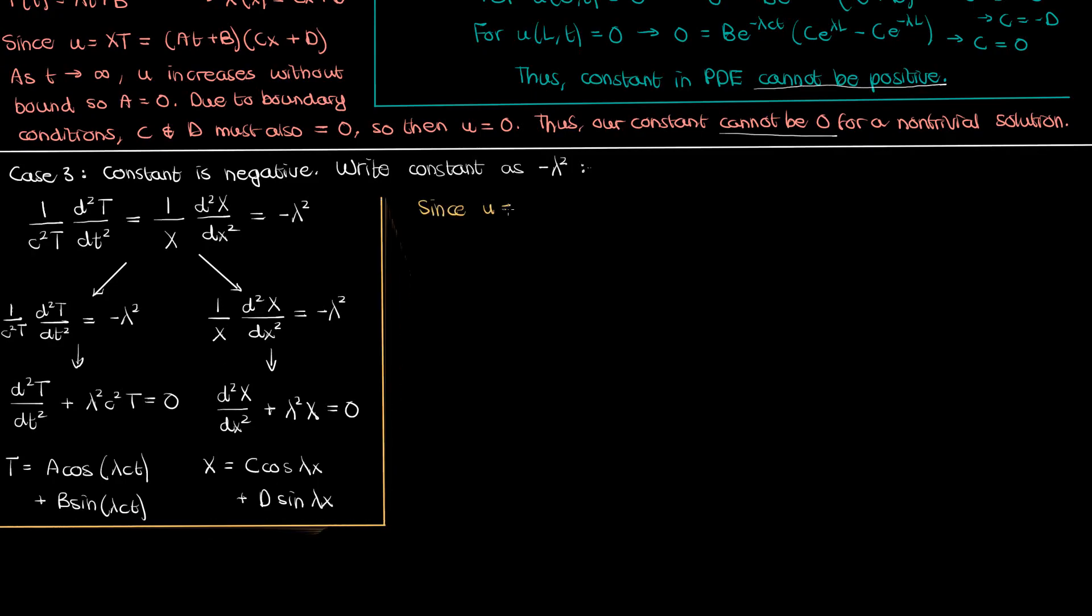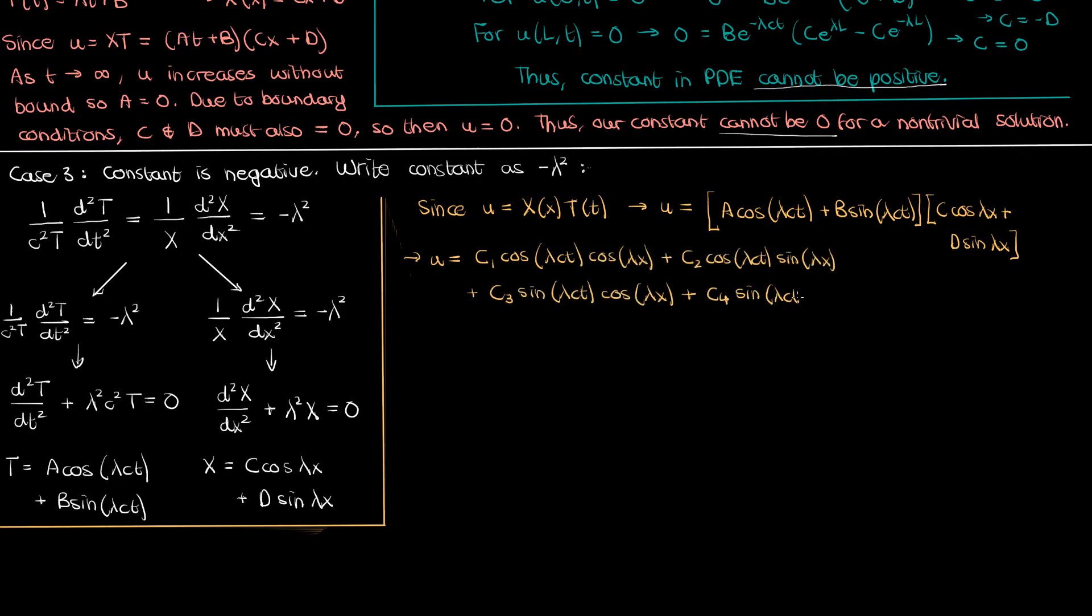Now because the solution to our overall PDE is the product of capital T and capital X based on the fact that we've separated the variables we can write u down as the following. Let's now expand this equation keeping in mind that a constant times another constant is still a constant and when we do that we end up with this where c1, c2, c3, and c4 are constants created from multiplying ac, ad, bc, and bd respectively.